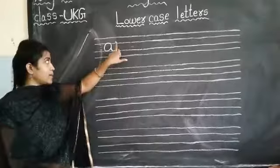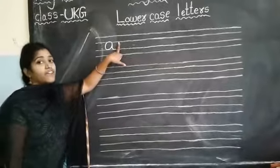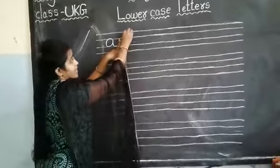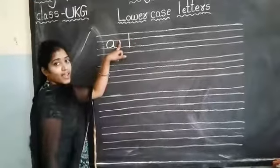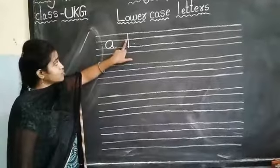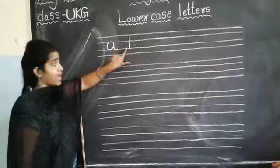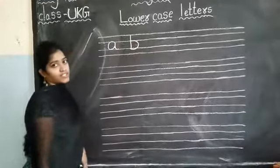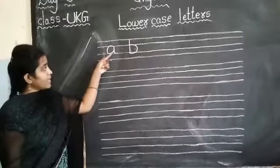So after that, which letter will come? Small b. So keep your finger here and write small b. Small b how? Standing line in three lines. How many lines? Three lines. See, first line I touched here. One, two, three. Standing line in three lines and curve. Curve should be in two lines. Understood? Small a, small b.